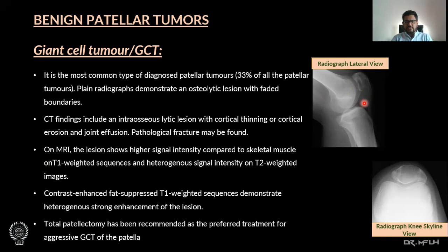On MRI, the lesion shows higher signal intensity compared to skeletal muscle on T1-weighted sequence and heterogeneous signal intensity on T2-weighted sequence. Contrast-enhanced fat-suppressed T1-weighted sequence demonstrates heterogeneous strong enhancement of the lesion. Total patellectomy is usually the preferred treatment for aggressive Giant Cell Tumour of the patella.